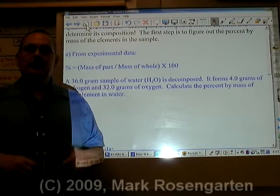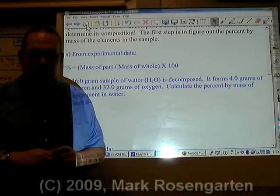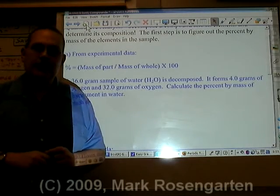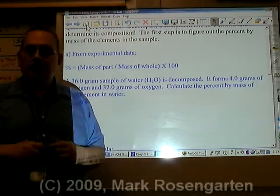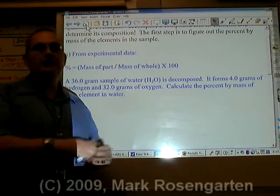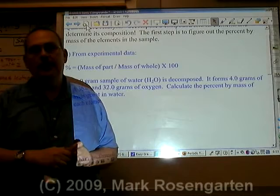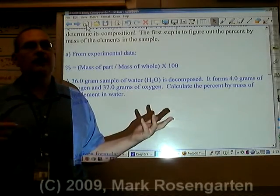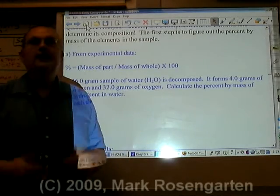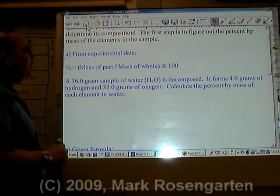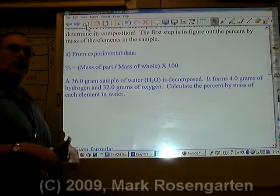Percent composition by mass: if you want to find out what the percent of something is, you take the part that you're interested in and divide it by the whole that the part is part of, then multiply by 100. Percent means per hundred. For example, if 75 people out of 100 are wearing sneakers, 75% of them are wearing sneakers.